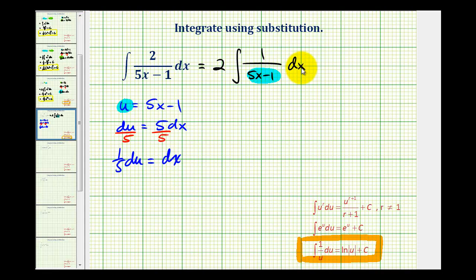So now we can replace dx with 1 5th du. So let's go ahead and write this in terms of u. The 2 would still be here. We have 1 over u. And then dx is equal to 1 5th du. So we'll pull out the 1 5th and then we have du.